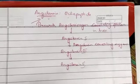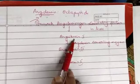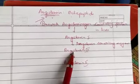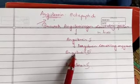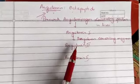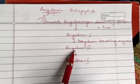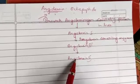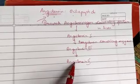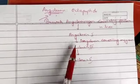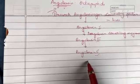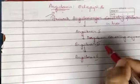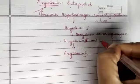Angiotensin 1 doesn't have much of a role in activity, whereas angiotensin 2 has got major functions in the body. Angiotensin 2 is short-lived because the action is very fast — within 1 minute it is converted to angiotensin 3, and angiotensin 3 acts similar to angiotensin 2. Among all three, the most distribution is angiotensin 2.